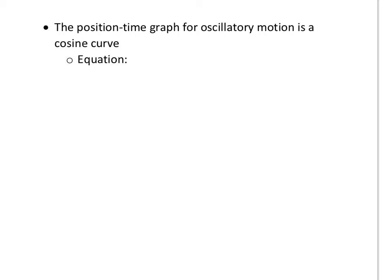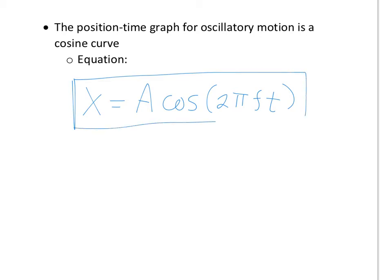The second important thing we need to look at when it comes to simple harmonic motion are the graphs and then the equations that describe the graphs. Because it's motion, you're going to have position, velocity, and acceleration. Let's start with the position-time graph. It's going to be a cosine curve. The equation describing that is x equals A cosine 2 pi f t. This is the only equation of these that is on the formula sheet.